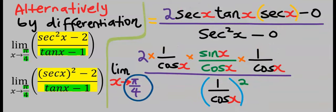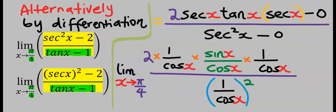Pi over 4 is the same thing as 45 degrees. Hence, you take the limit of this function. Wherever you see x, you substitute 45 degrees.